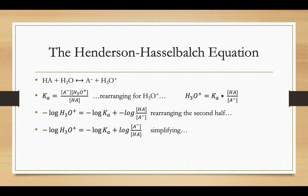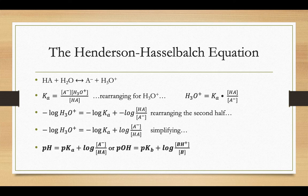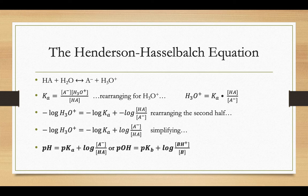Well, if we're doing the negative log of H3O+, that's the pH, right? And if we're doing the negative log of the Ka, that's the pKa. So, in bold there at the bottom, there's your Henderson-Hasselbalch equation, that the pH equals the pKa plus log of A- over HA.